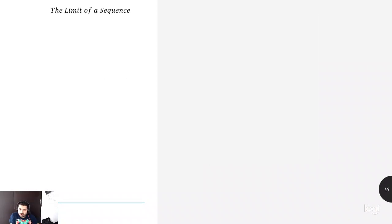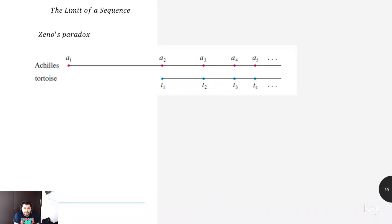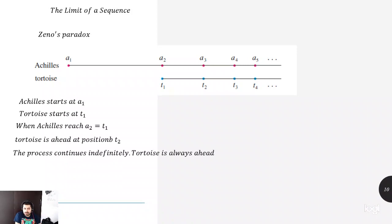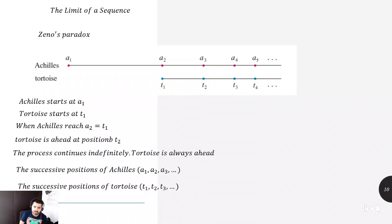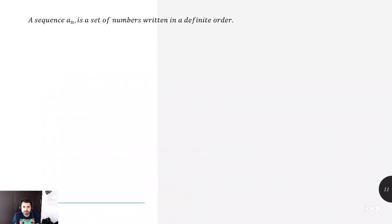So then, the other situation of calculus is the limit of a sequence. It comes from Zeno's paradox. So imagine that Achilles, this person starts at a point a1, and the tortoise starts at a point t1. When Achilles reach a2 equal to t1, then tortoise is ahead at position t2. The processing continues indefinitely. Tortoise is always ahead. The successive positions of Achilles, a1, a2, a3, and the successive positions of tortoise t1, t2, t3.